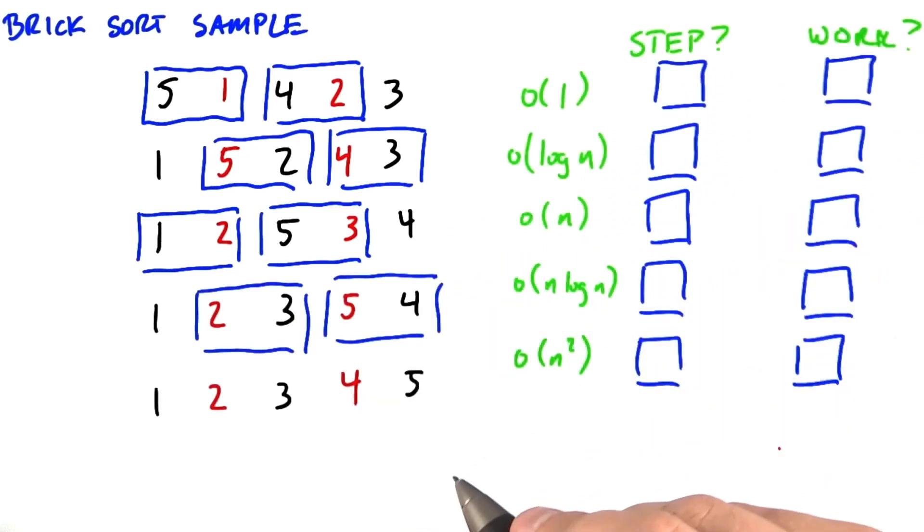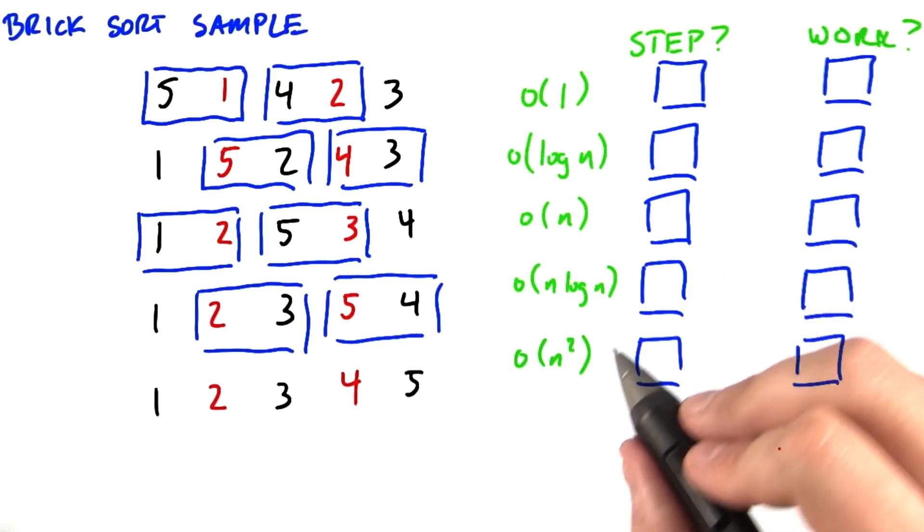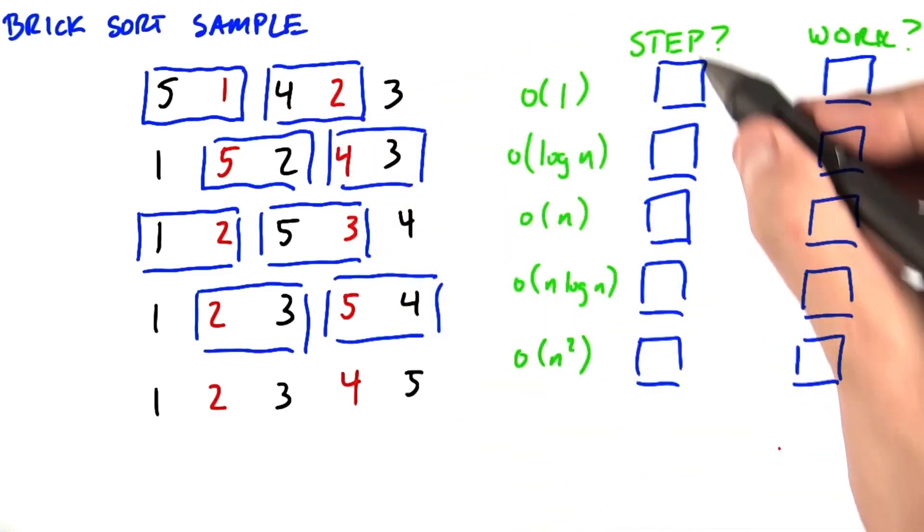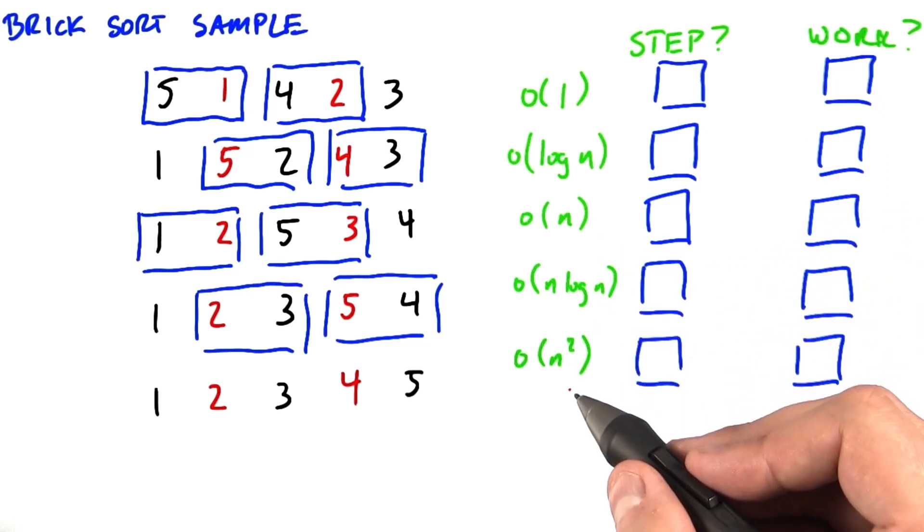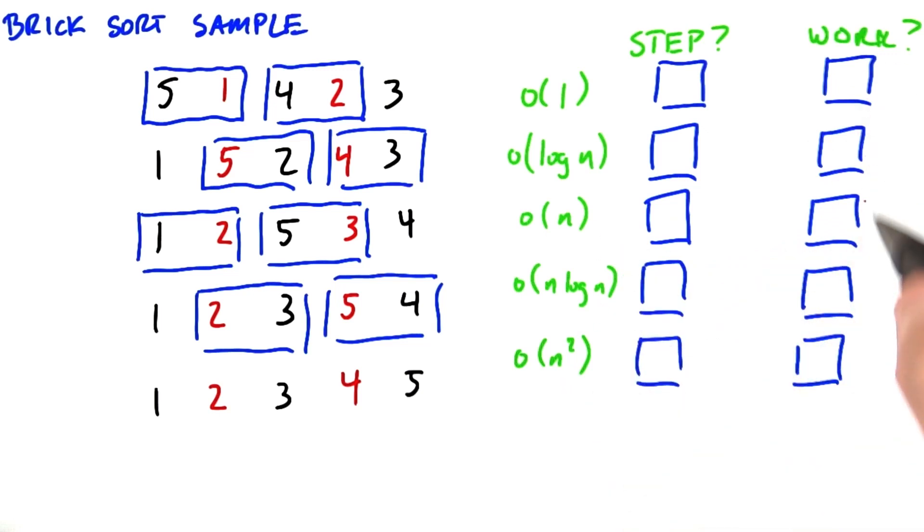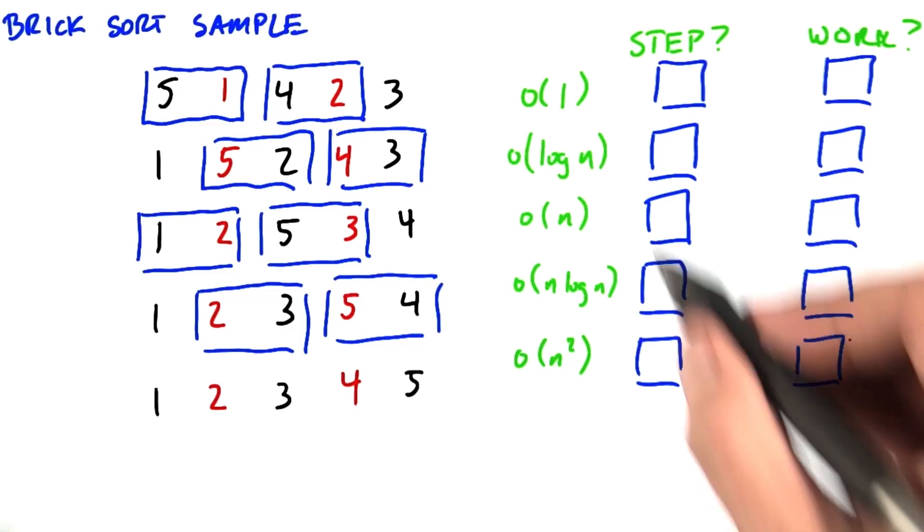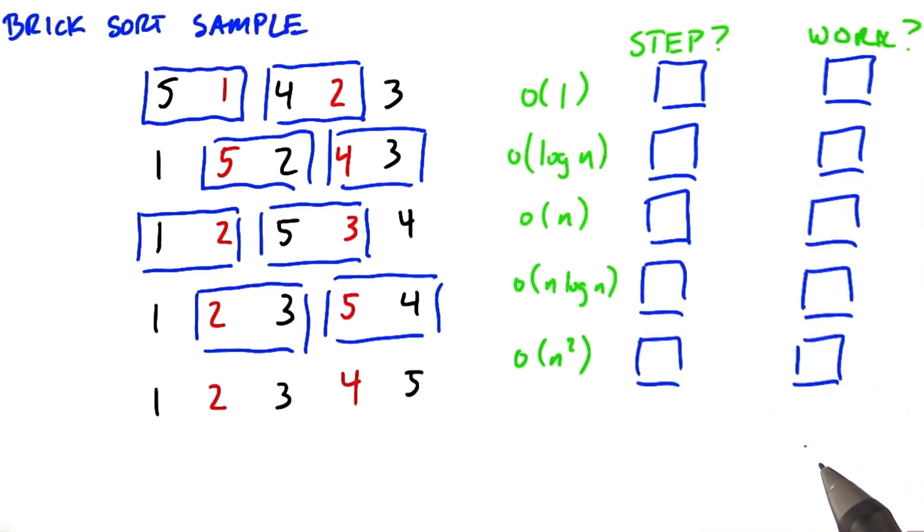So it's very important that we understand how to measure the step and work complexity of these algorithms because that's often the dominant factor in their runtime. So for this algorithm, what is the step complexity of this algorithm: order of 1, log n, n, n log n, or n squared? And what is the total amount of work that we need to do with the same choices? Please check your choice.